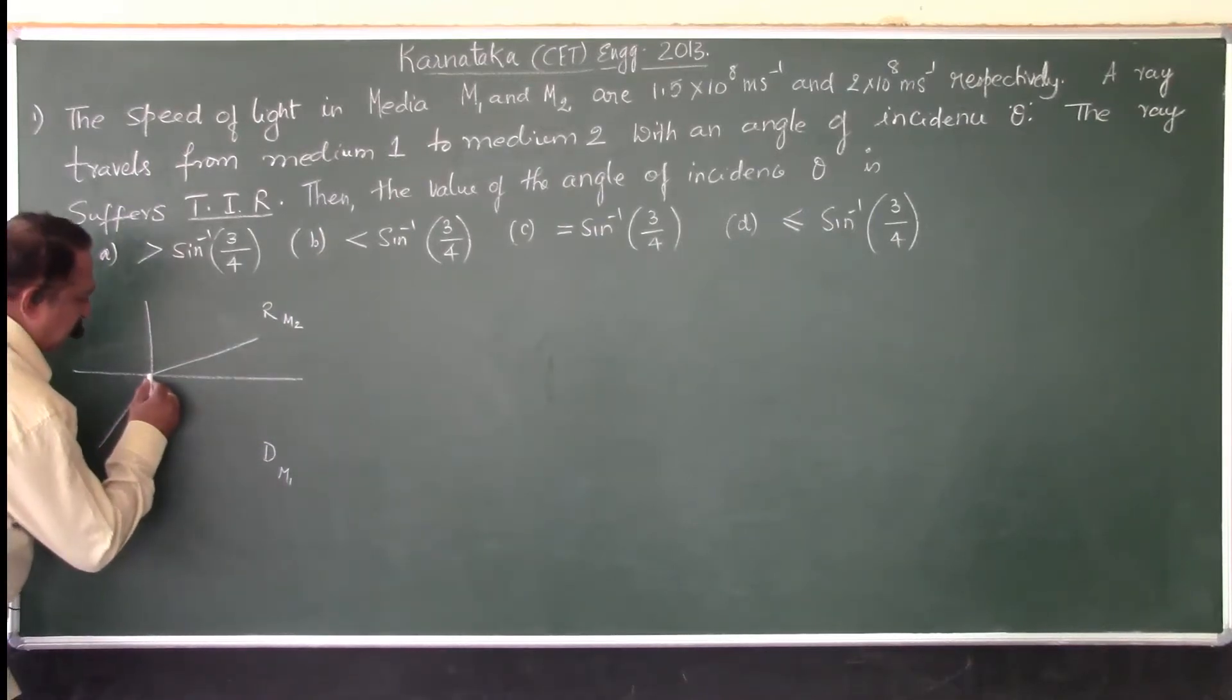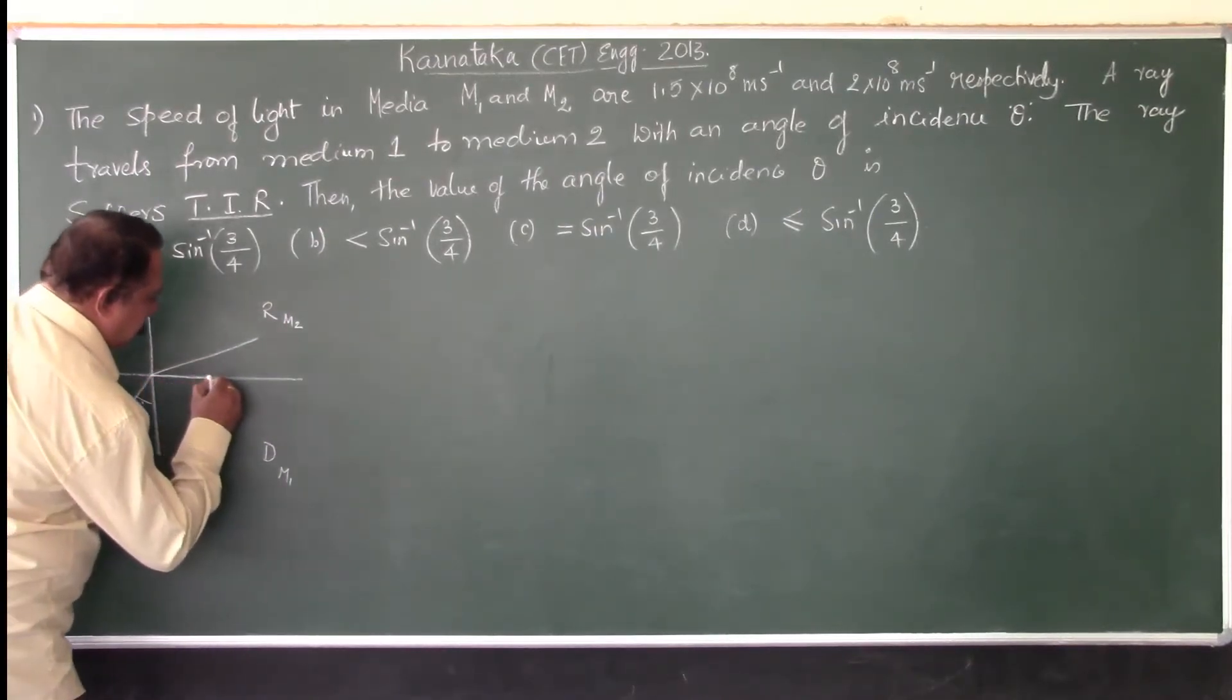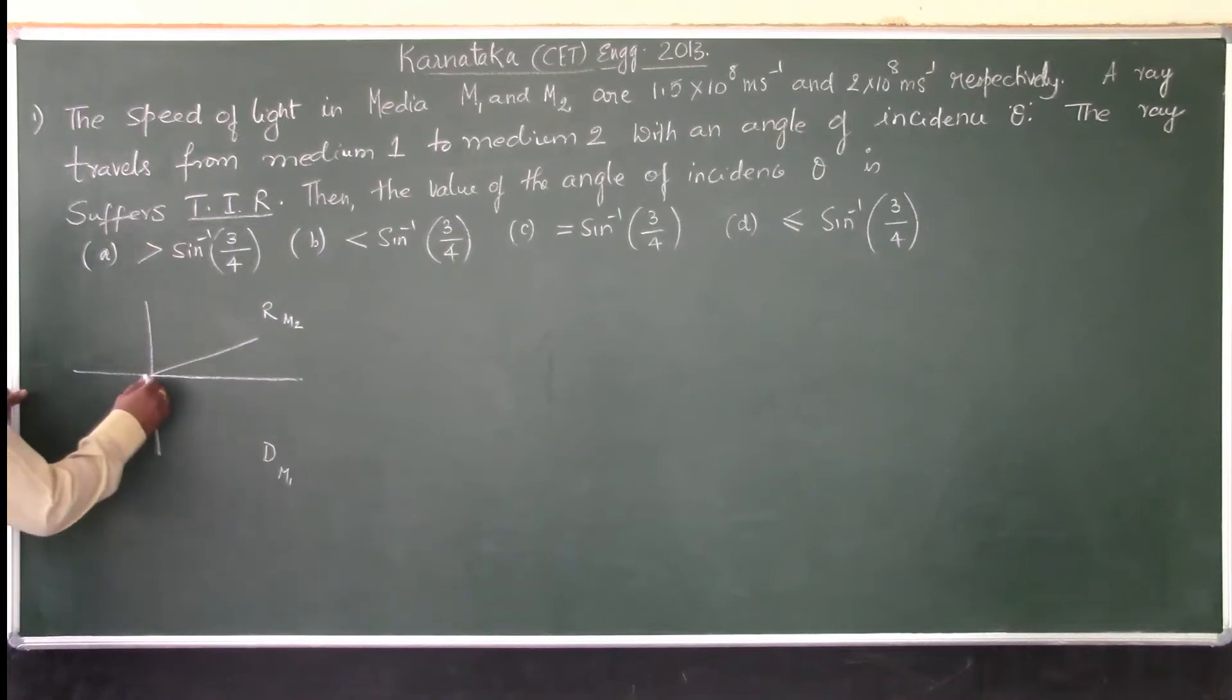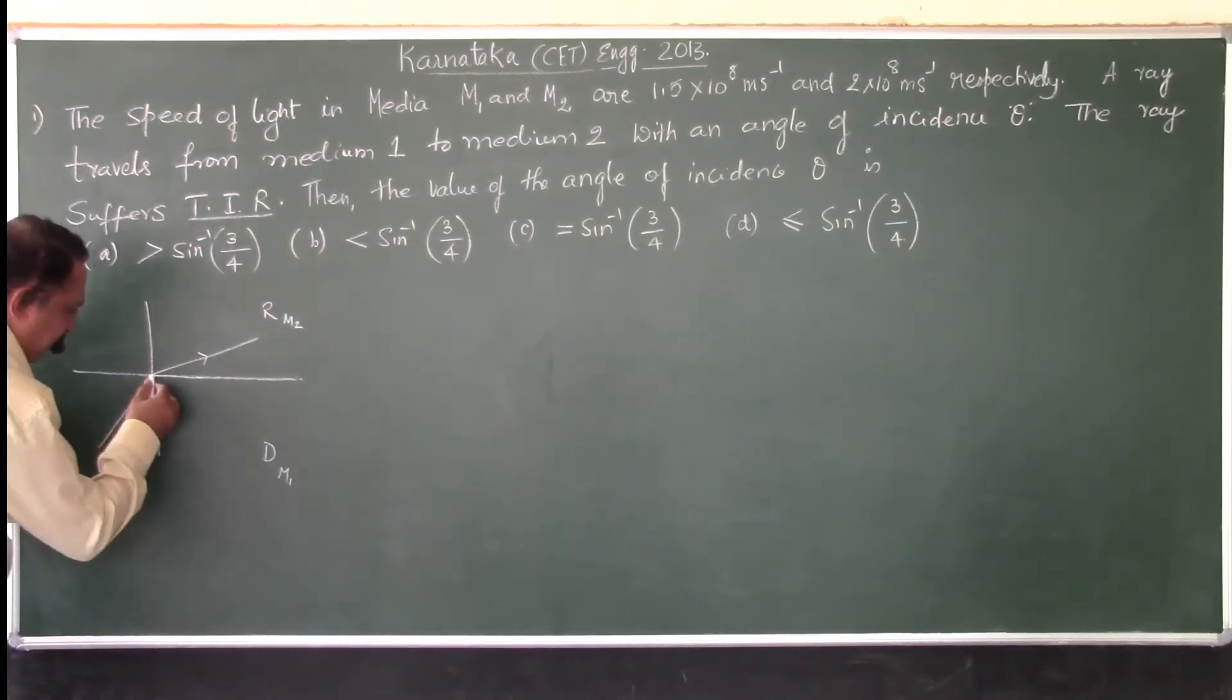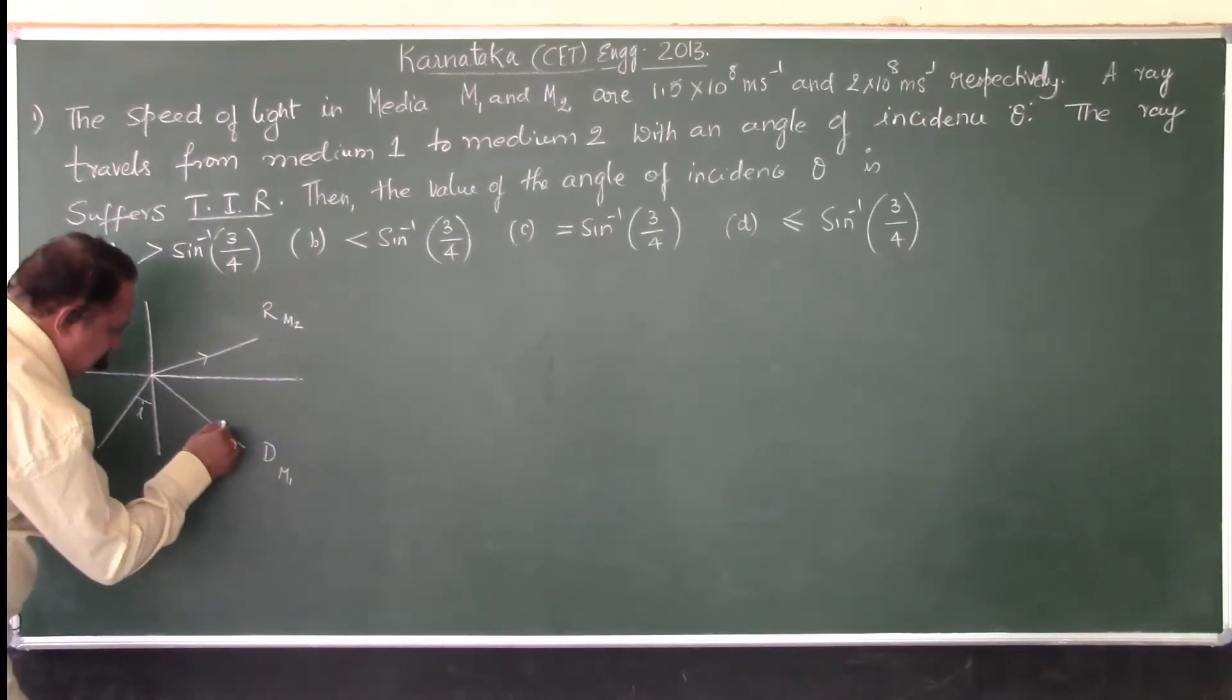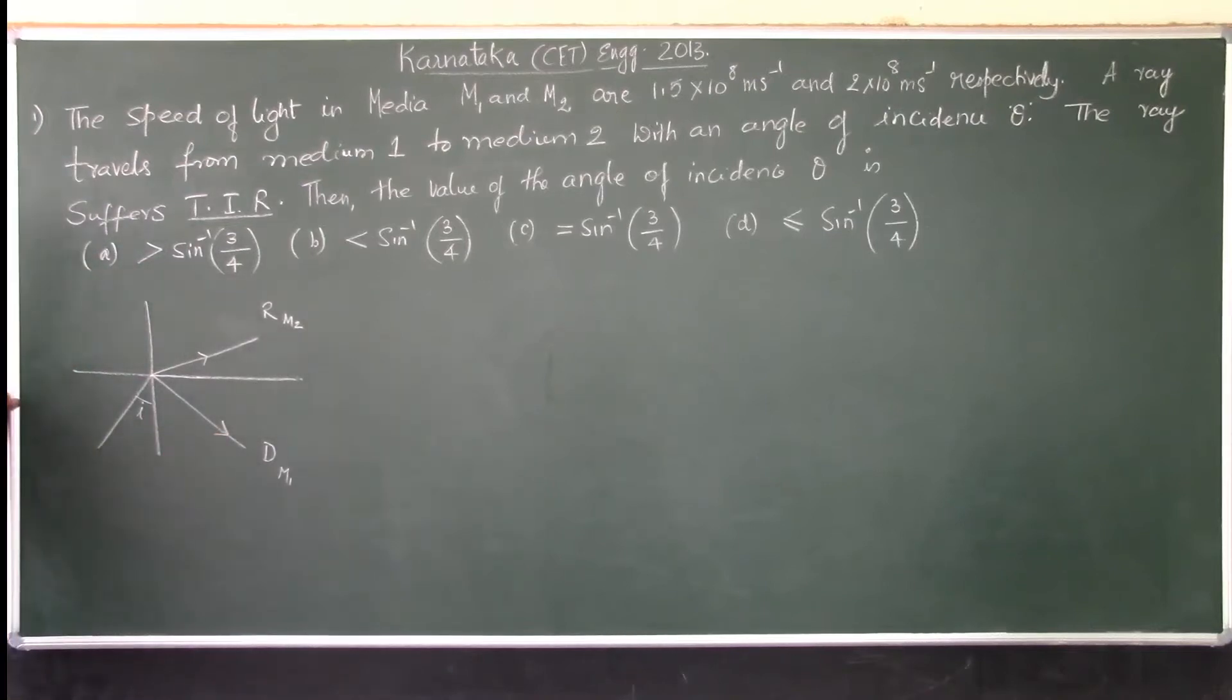Now, for a particular angle of incidence, as I increases, the refracted ray will just graze the surface and further if I increases, then the refracted ray will completely turn into the denser medium itself. And in this case, when the angle of incidence is greater than the critical angle,